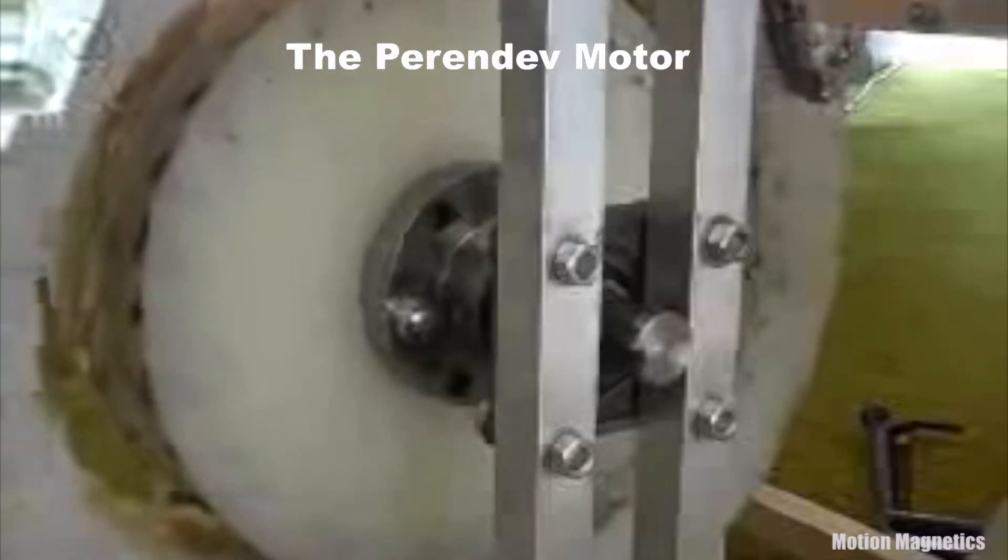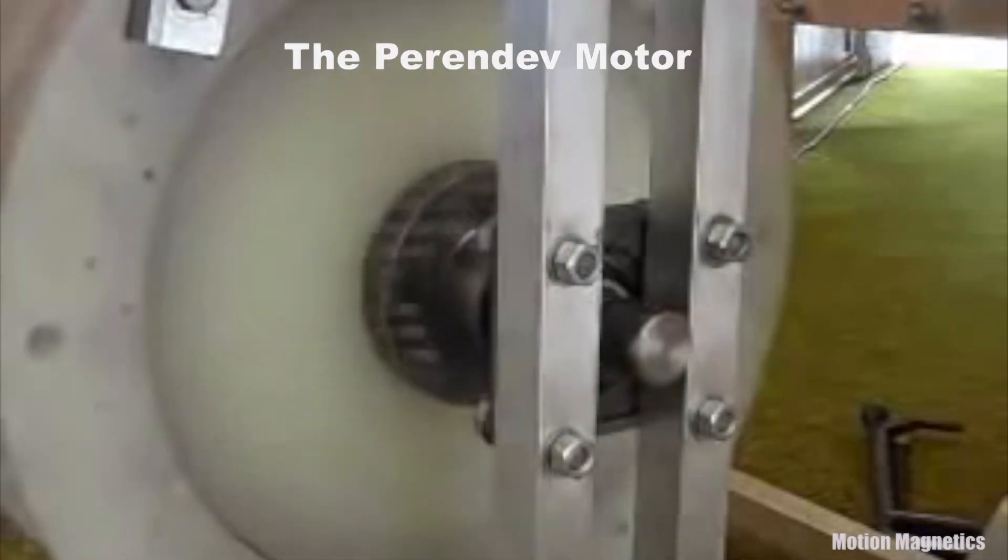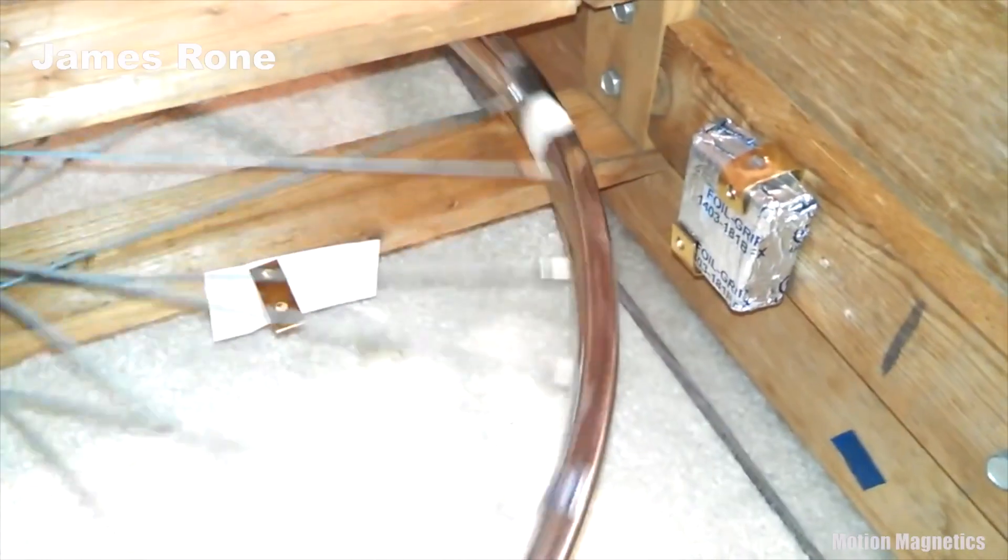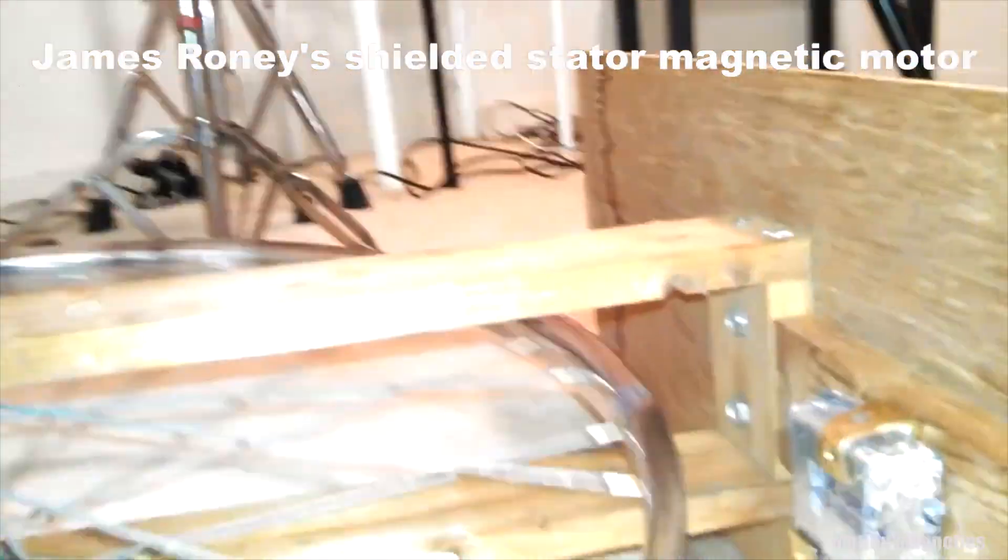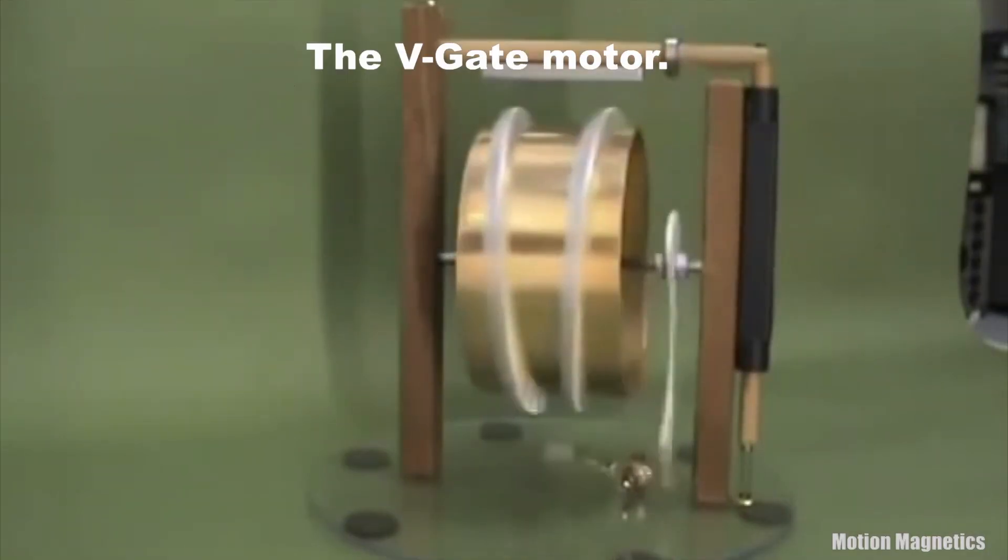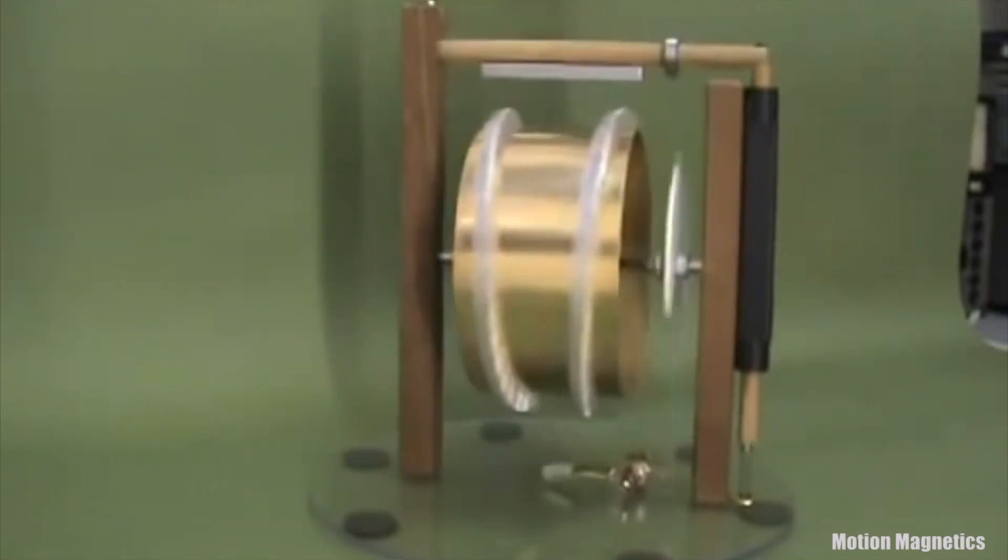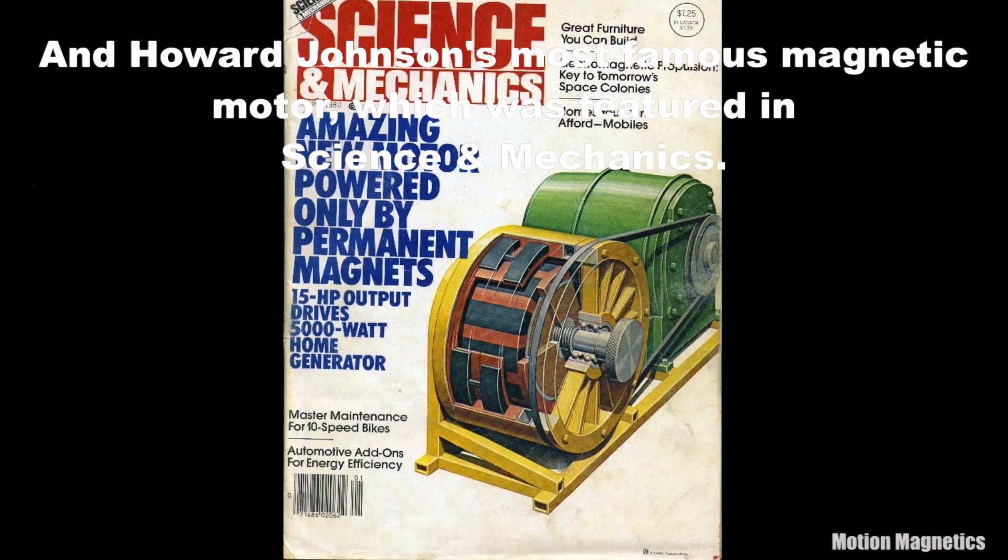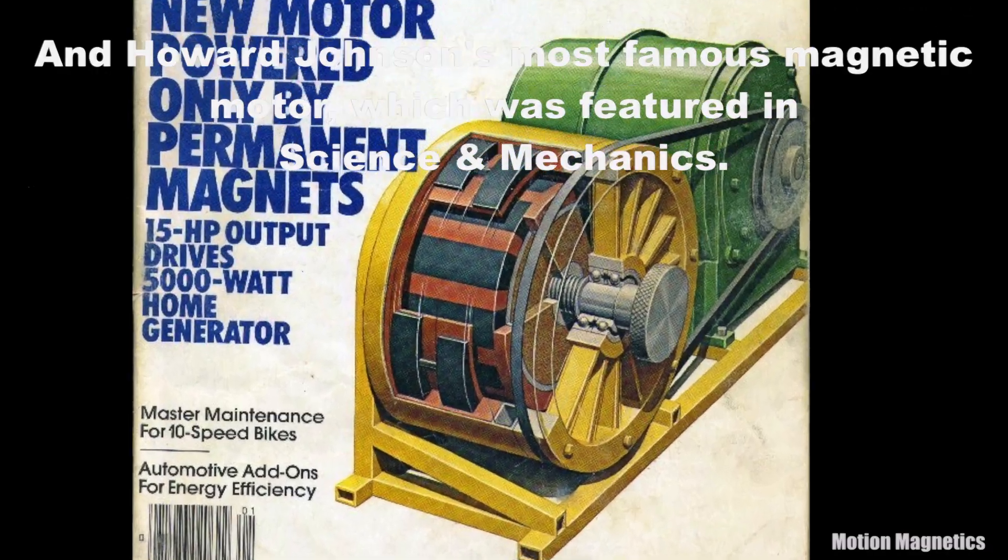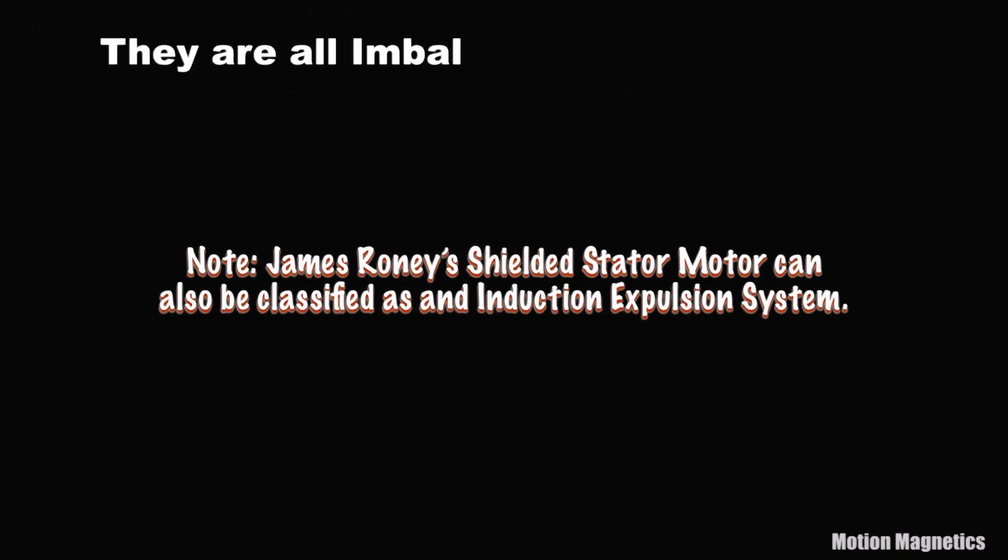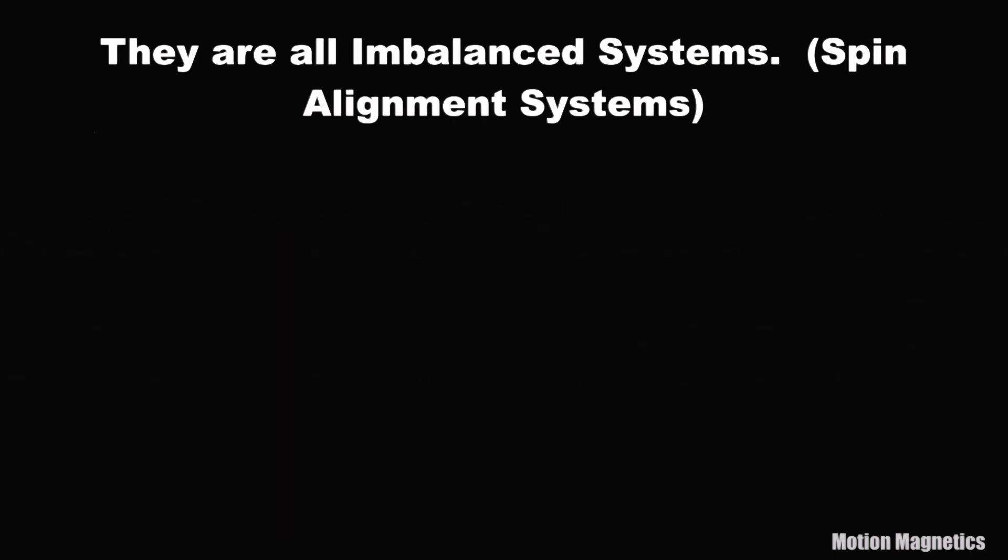The Perrin-Dev motor, Bill Muriel Ditz magnetic motor, James Roney shielded stator magnetic motor, the Vigay motor, and Howard Johnson's most famous magnetic motor, which is featured in Science and Mechanics. What do they all have in common? They are all imbalanced systems, or spin alignment systems.